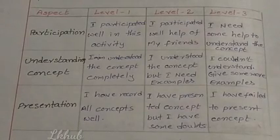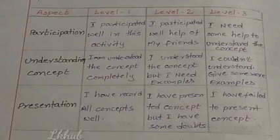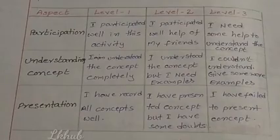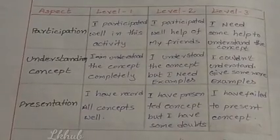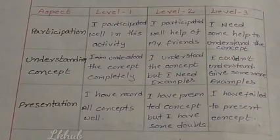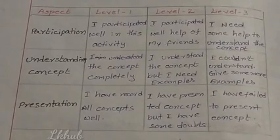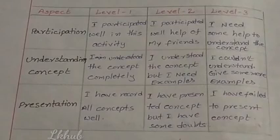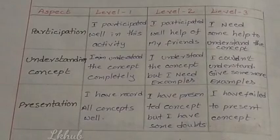Level 1 children: I participated well in this activity. Level 2: I participated well with the help of my friends. Level 3: I need some help to understand the concept. For understanding the concept — Level 1: I understood the concept completely. Level 2: I understood the concept but I need examples. Level 3: I couldn't understand; give some more examples. For presentation — Level 1: I have recorded all concepts well. Level 2: I presented the concept but have some doubts. Level 3: I have failed to present the concept.